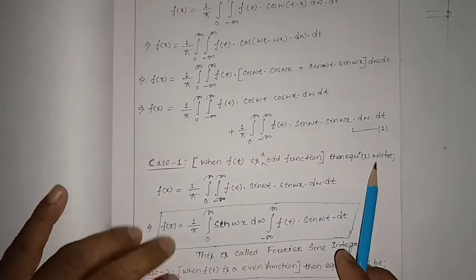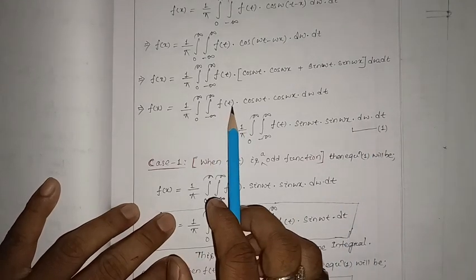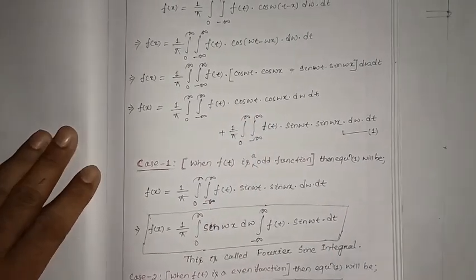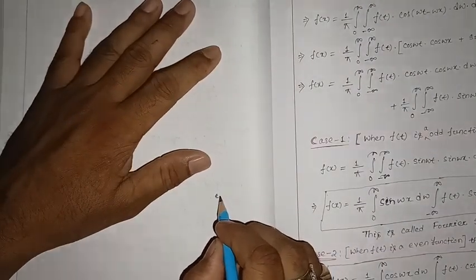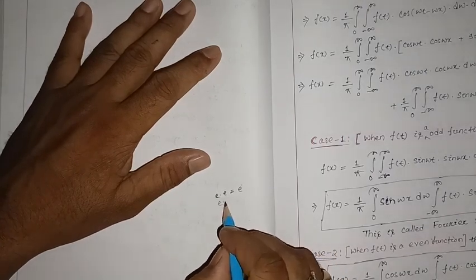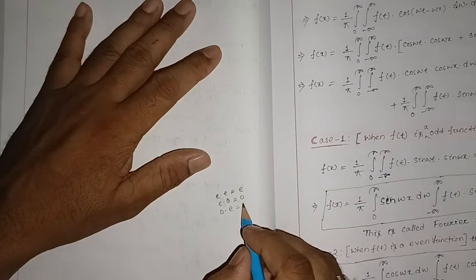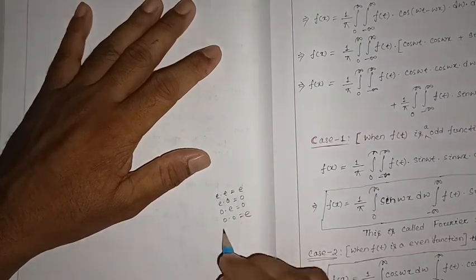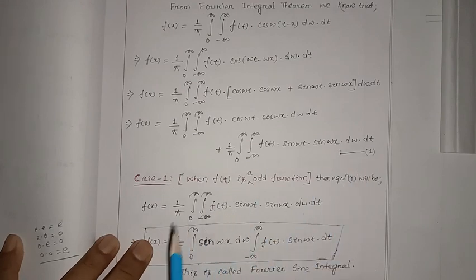When f(t) is an odd function, be careful — you already know that even times even is even, even times odd is odd, and odd times odd is even. So we apply these properties to equation number one carefully.